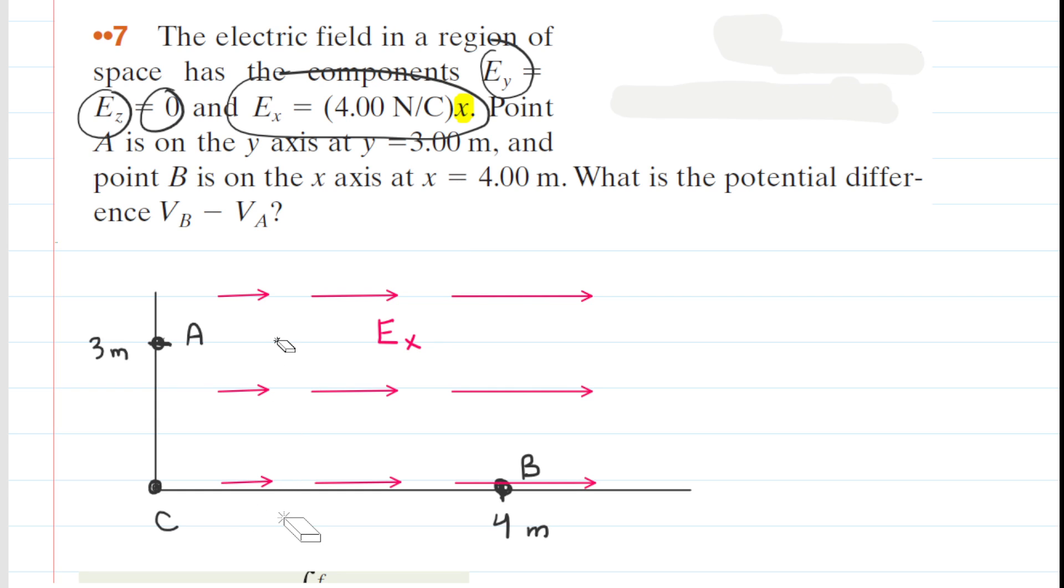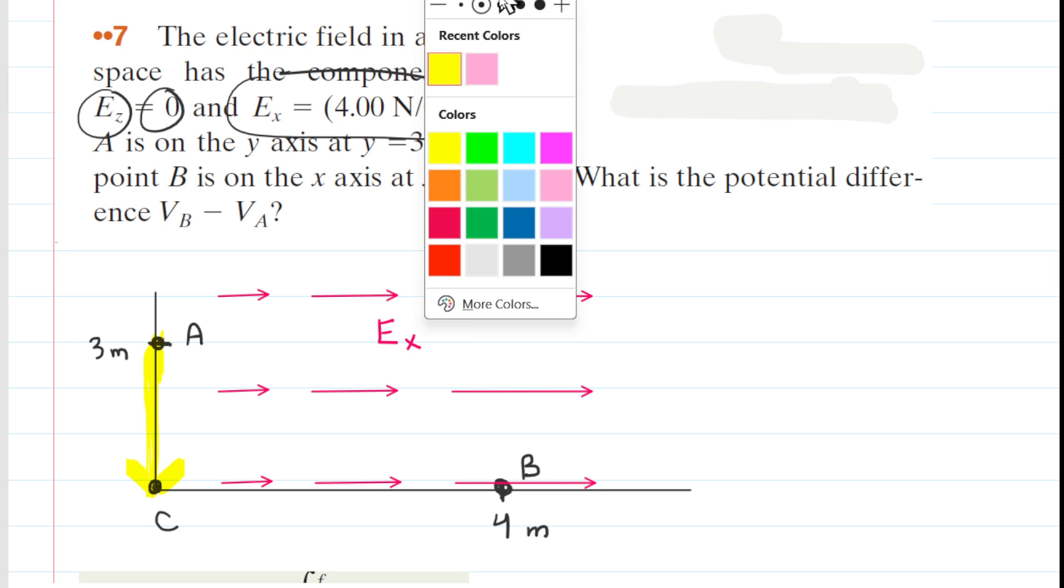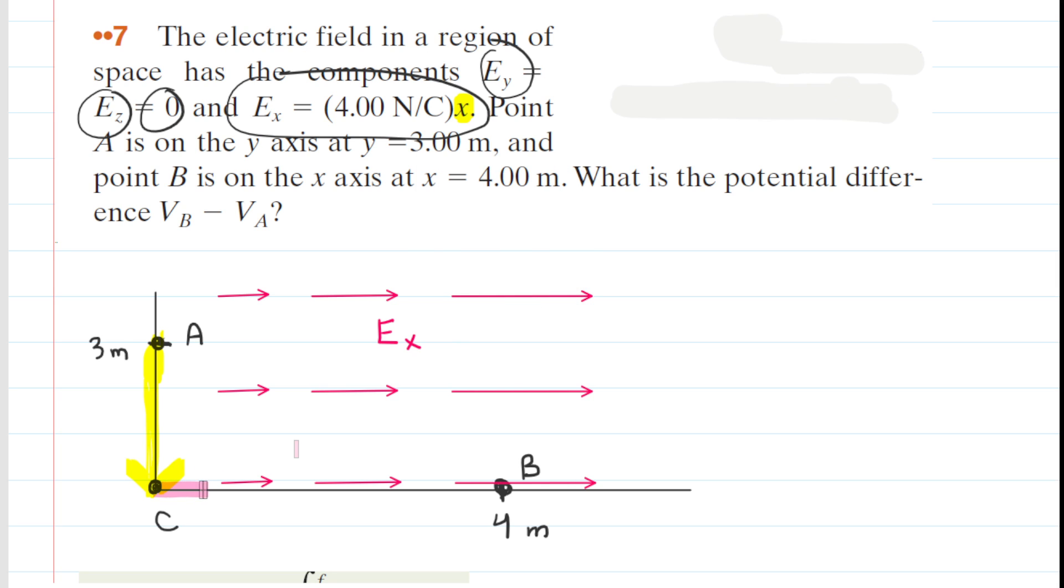Now our job is to calculate the potential difference between points B and A, and our strategy is actually going to be to move from A to a new point called C, which we've placed at the origin. We're going to first calculate the potential change as we move from point A to point C, and then calculate the potential change as we move from point C to point B. We are permitted to do this because the electric force is a conservative force, and that means that when you find the potential difference between two points, it doesn't really matter the path that you travel.